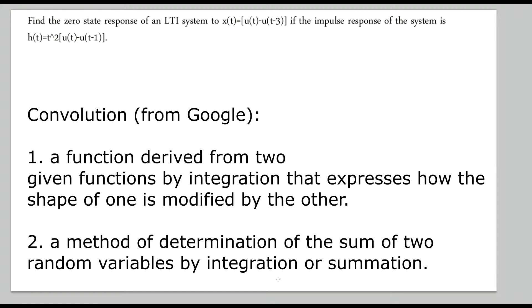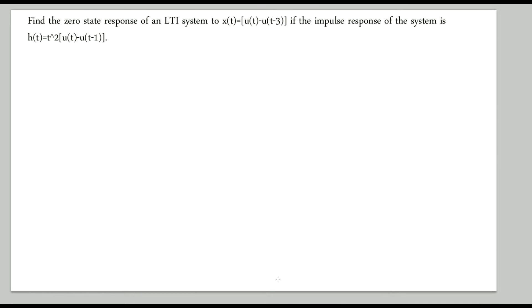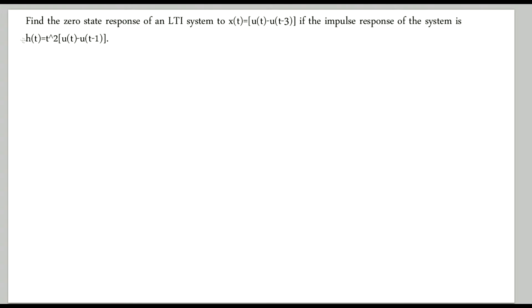Find the zero state response of a linear time invariant system to x of t equals the impulse u of t minus u of t minus 3 if the impulse response of the system is h of t equals t squared of the impulse u of t minus u of t minus 1. So the first thing you want to do is draw out the signals.